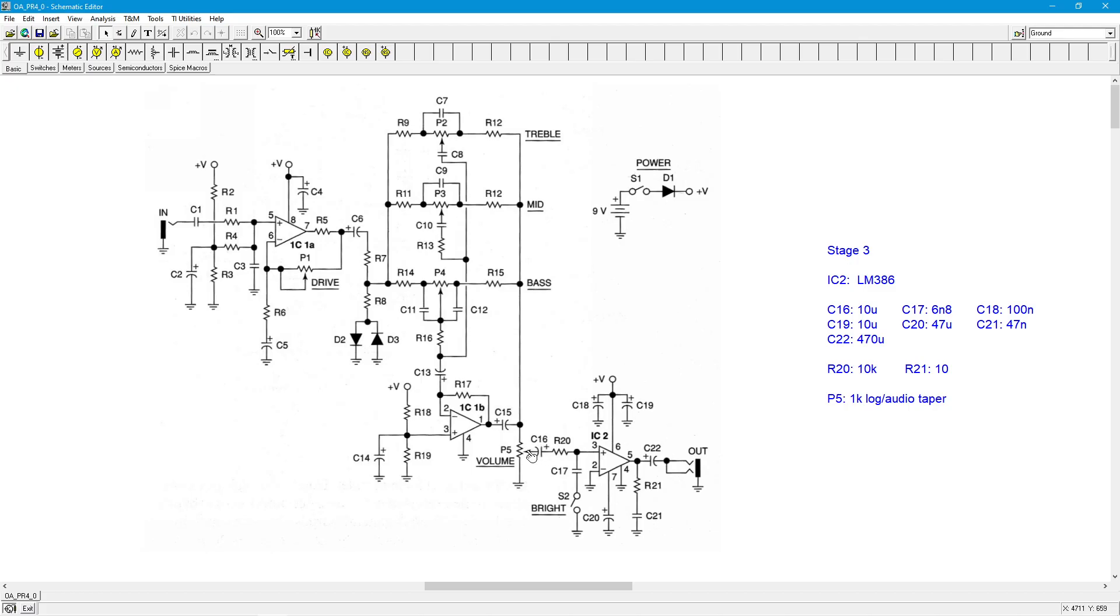Now this pot, like the drive pot, should be a log or audio taper pot, unlike the standard pots P2, P3, and P4 that we had in the EQ section. These are standard everyday normal linear pots. But these two, you really want those to be audio taper. If you had a linear pot and you put it in here, it would work, but the rotation of the pot would be overly sensitive in some parts and very insensitive in other parts.